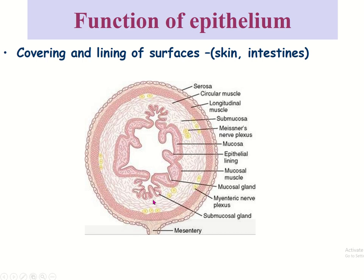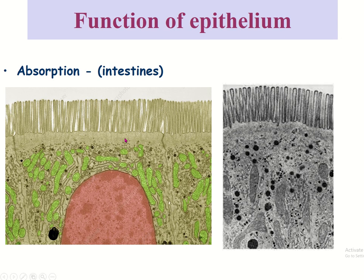The functions of the epithelium include covering and lining of surfaces. This is the cross-section of the gastrointestinal tract — the inner side and outer side are covered by covering epithelium, providing protection. Microvilli are projections of the cytoplasm with cell membrane and internally present actin filaments; this structure is known as microvilli and is responsible for absorption.